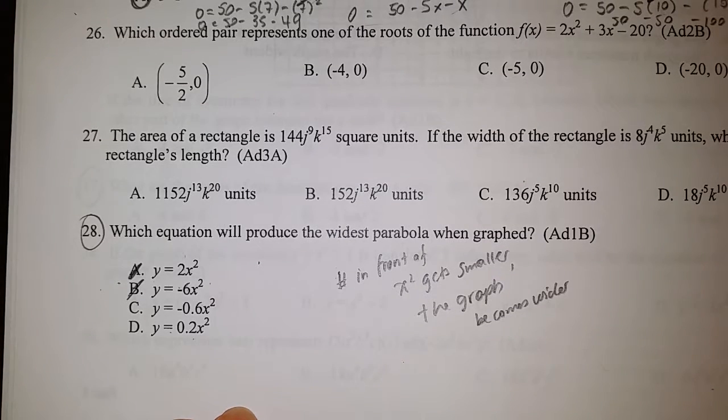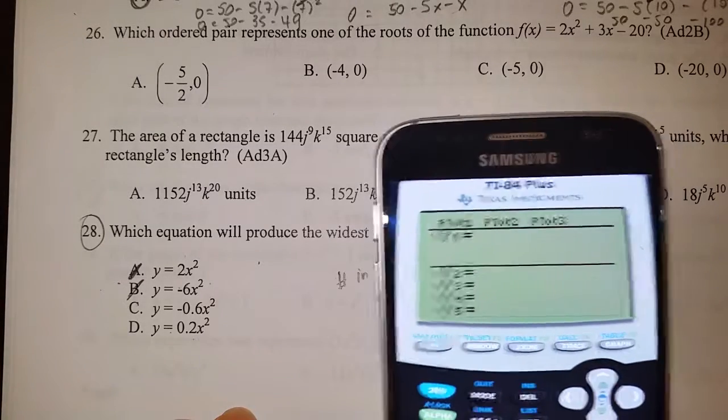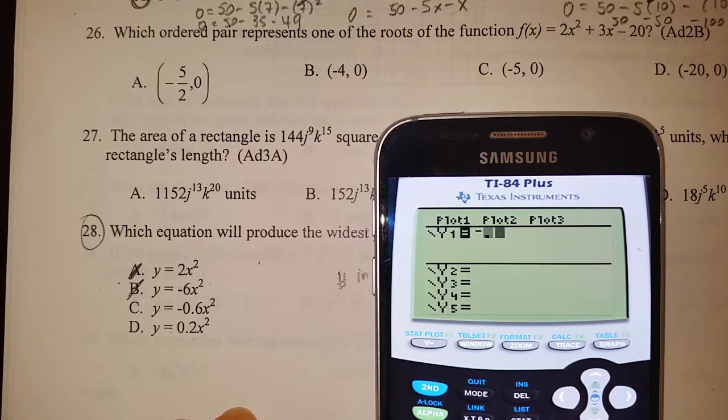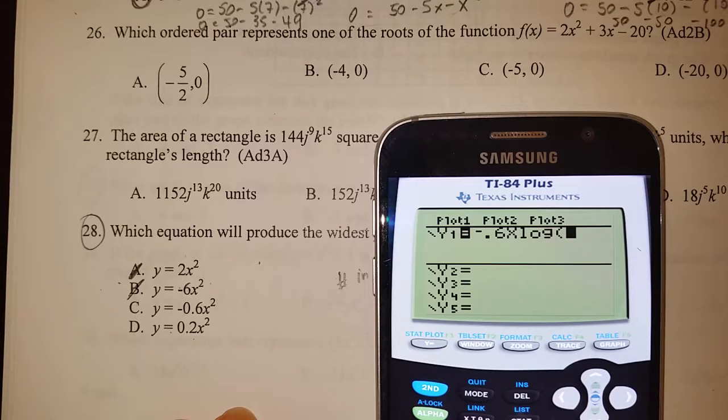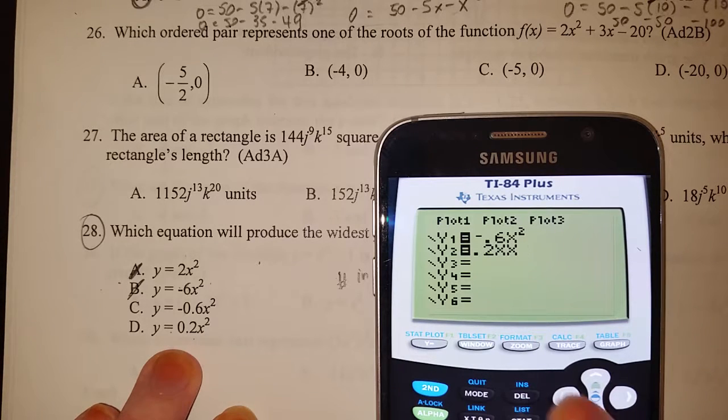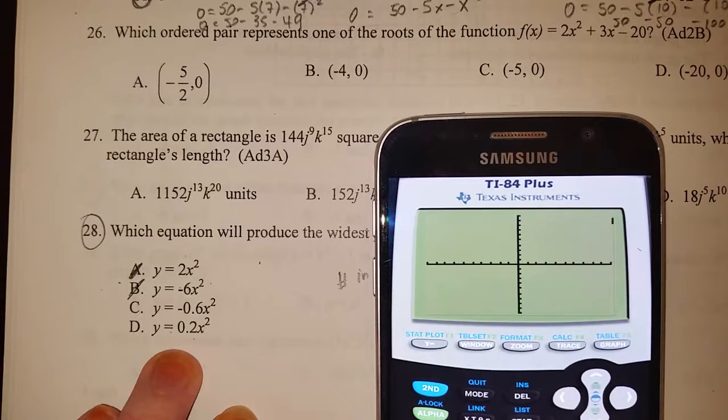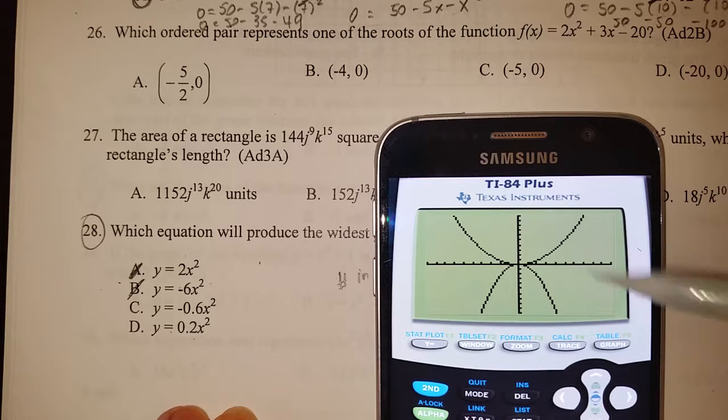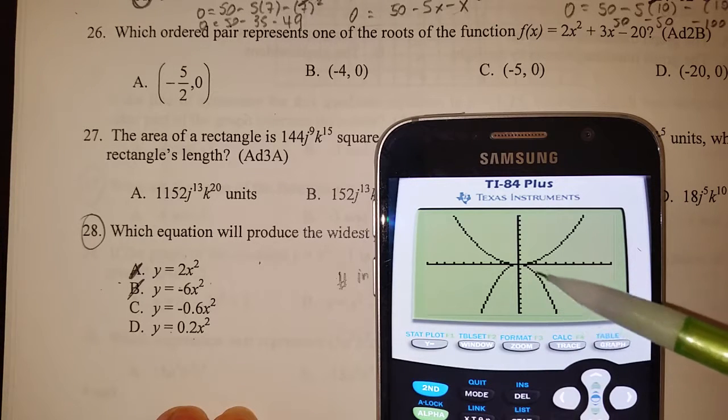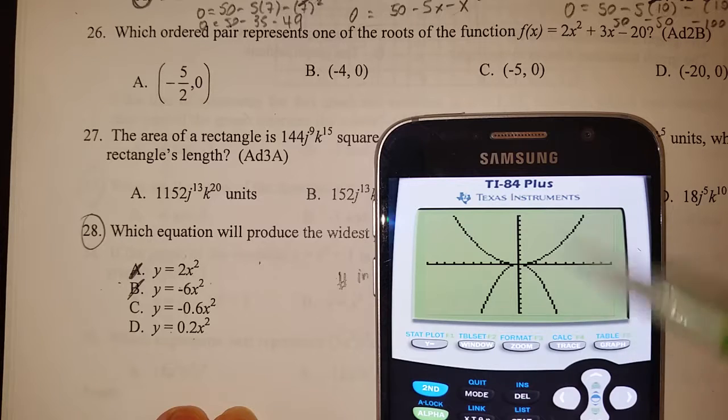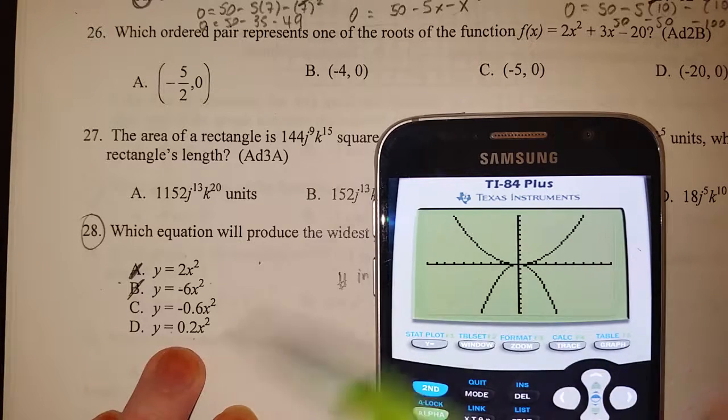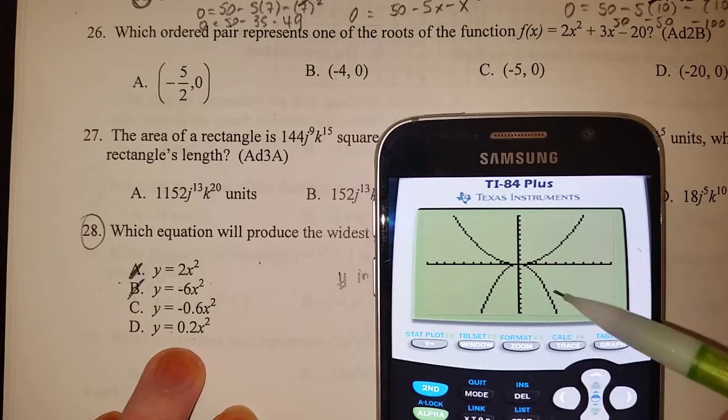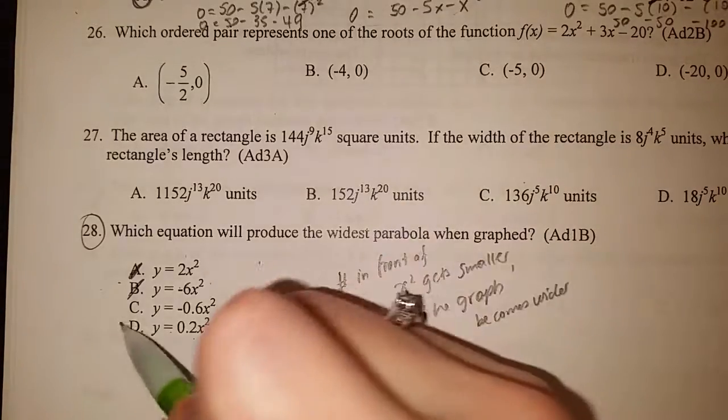Let's check this anyway. I'm going to put in -0.6x² and in my second line 0.2x². Graph it. I was right - as you can tell, this one opens downward but it's not very wide. This one opens up, that's our 0.2x², and that is a lot wider than this one. So the correct answer would actually be D.